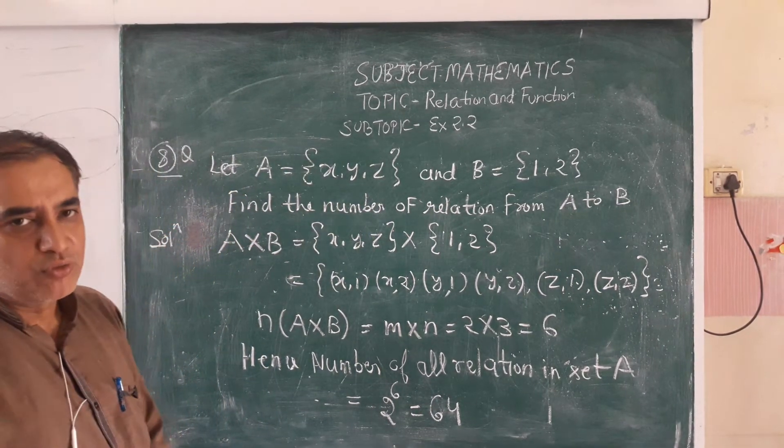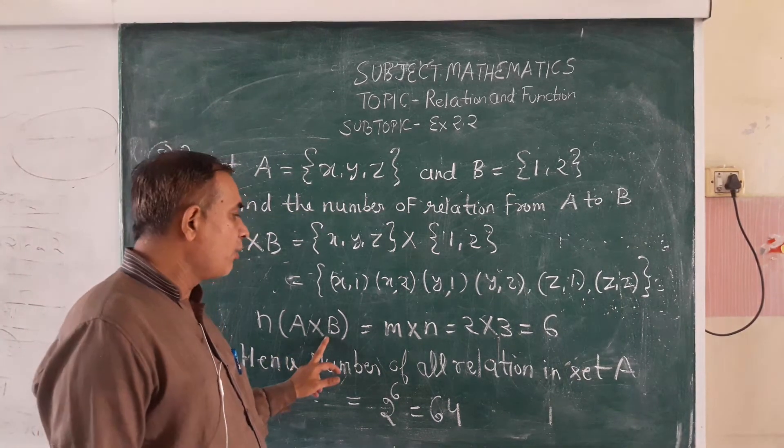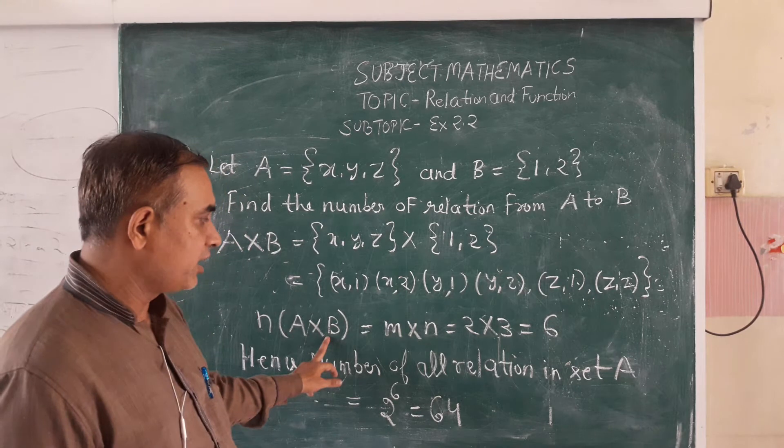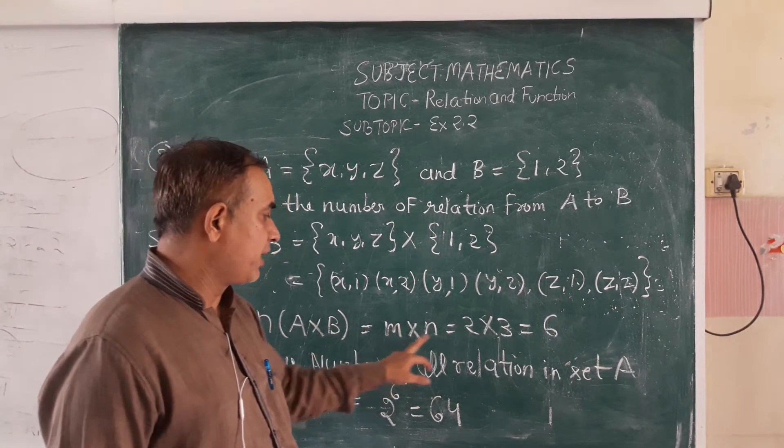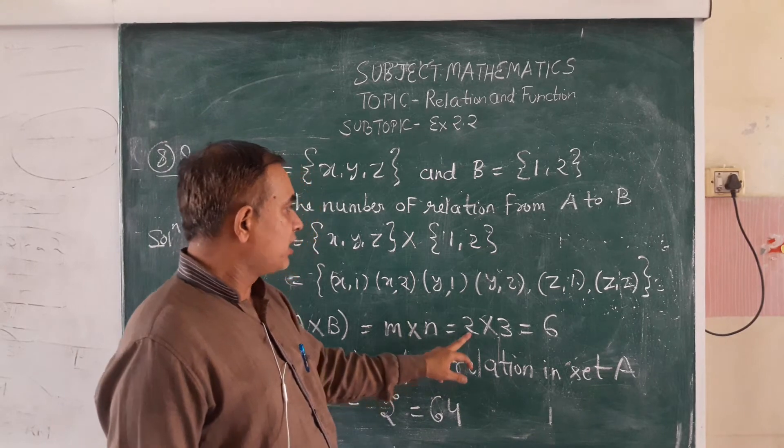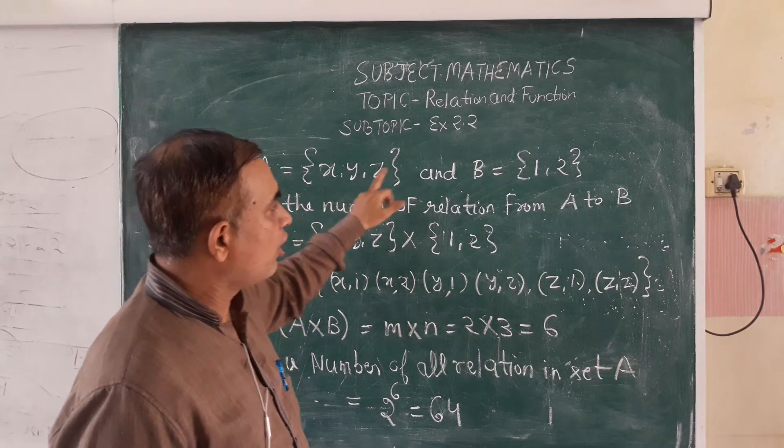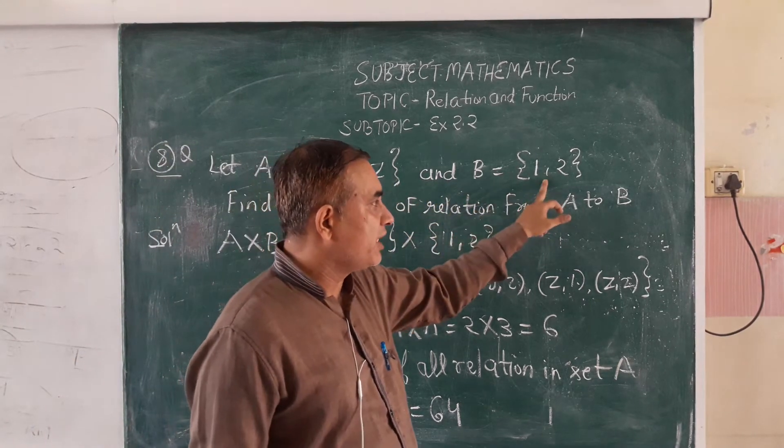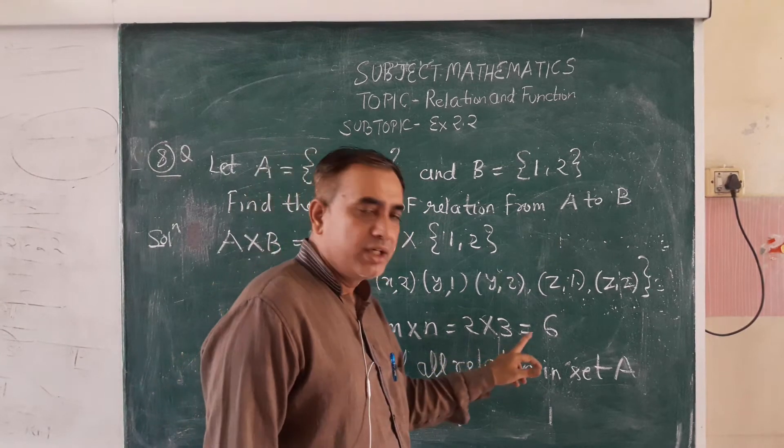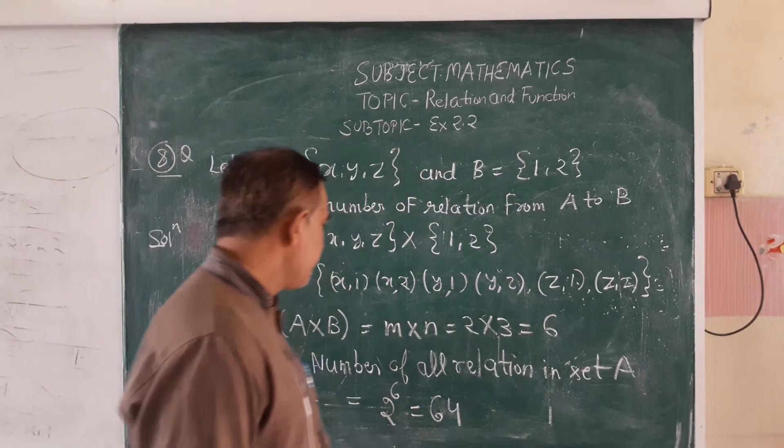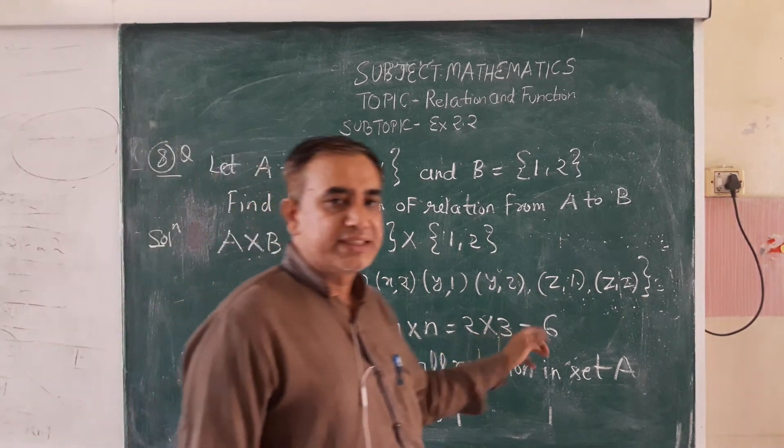Now, to find n(A cross B), we count how many ordered pairs are here. We have a formula that is M multiply N. The number of elements in set A is 3 and the number of elements in set B is 2. So we multiply 2 multiply 3, that equals 6. Our answer is n(A cross B) equals 6.